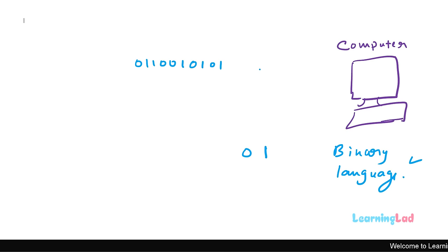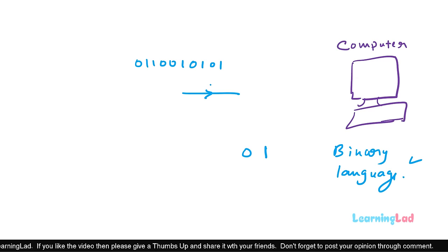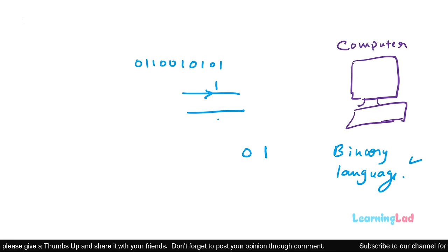Why are computers built to understand binary language? Because binary language, which has only two values, is easy to create at the hardware level. For example, if we have a wire and current is flowing through it, we say it is 1; if current is not flowing, we say it is 0. So 1 stands for something which exists and 0 stands for something which doesn't exist.